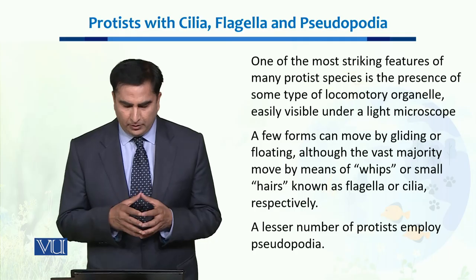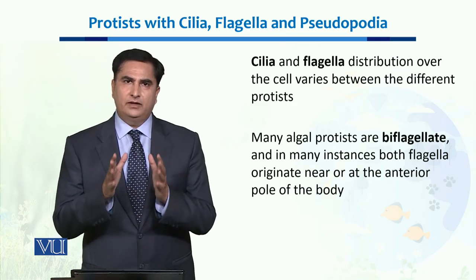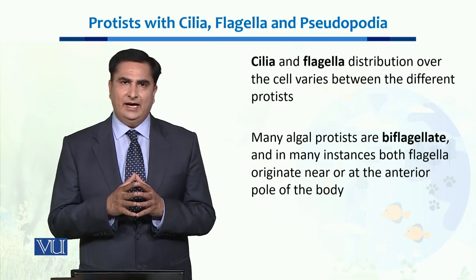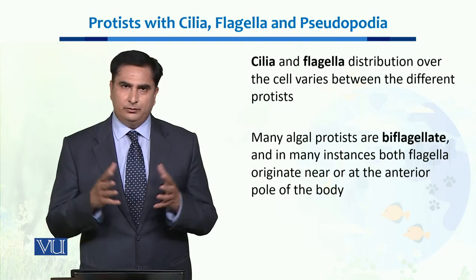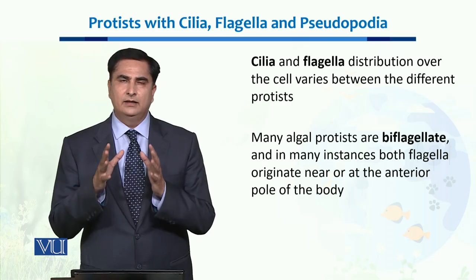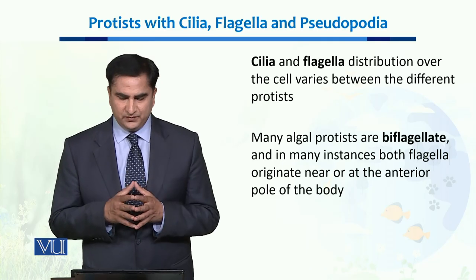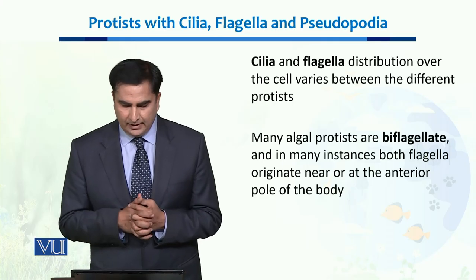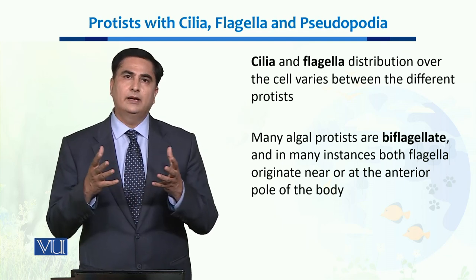When we talk about these locomotory organs — cilia and flagella — their distribution over their body varies from one protist organism to another. Some organisms have cilia all over their body, while many protists have flagella instead. Flagella are mostly present in the form of a pair, so most unicellular floating algae are biflagellates, with both flagella originating near the anterior pole of the body. An example is Chlamydomonas.